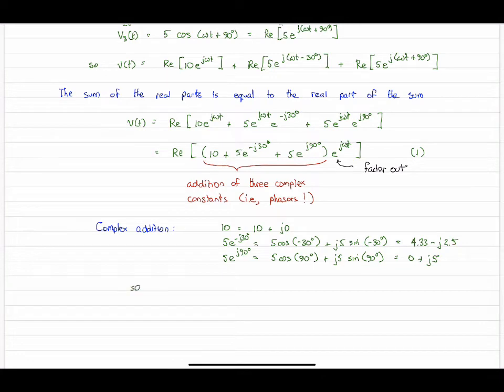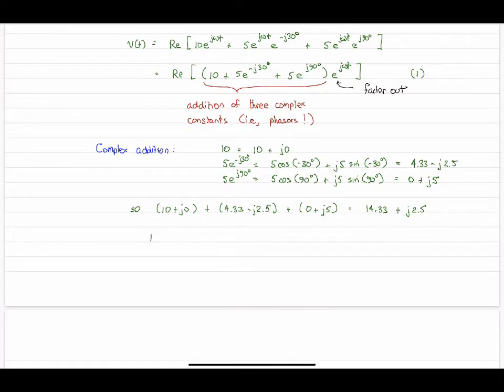Let's add them up. As usual, we'll add all the real parts, add all the imaginary parts, and we'll get a combined complex number. Here it is: 14.33 plus j2.5. You can think of that as the addition of three vectors: taking one vector, tacking it on the end of the first vector, and then doing the same for the third vector.